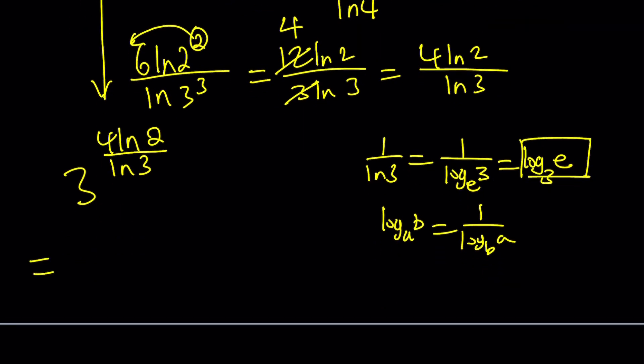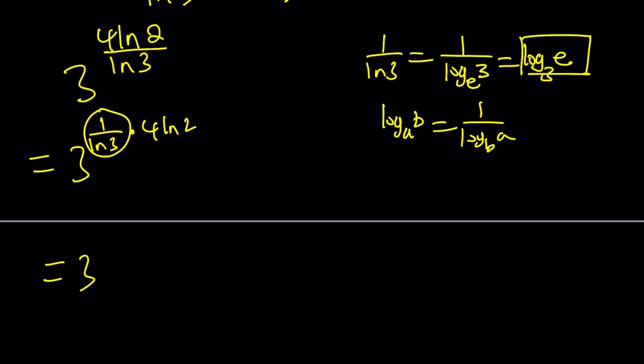I can write it as 3 to the power 1 over ln 3 times 4 ln 2. Then this part can be written as 3 to the power log e with base 3, and then that will be multiplied by 4 ln 2. We can take out that exponent and write it like this.